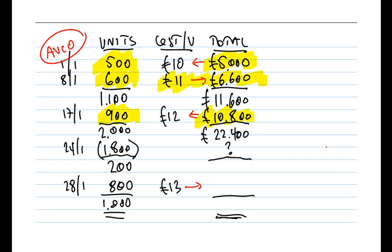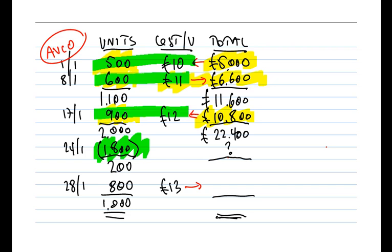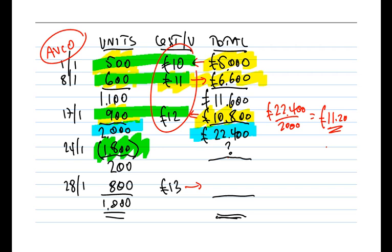AVCO works on the idea that when we make the issue of 1,800 units, perhaps we don't really know which units we're selling — whether it's opening inventory, the 8th purchase, or the 17th purchase. Maybe the units are all jumbled together in the storeroom, so we take the average cost. At end of day on the 17th, we had £22,400 of value for 2,000 units. Taking £22,400 ÷ 2,000 gives an average cost per unit of £11.20. This makes sense because the 2,000 units is a mixture of some at £10, some at £11, some at £12, so the average of £11.20 sits within those figures.